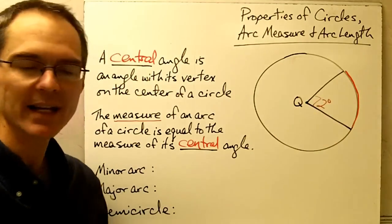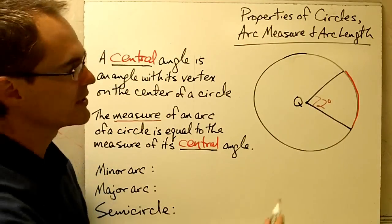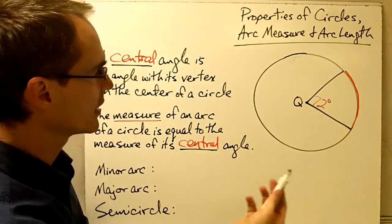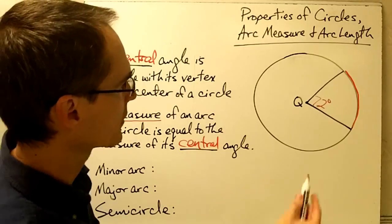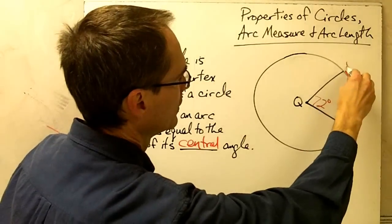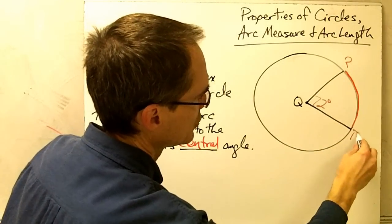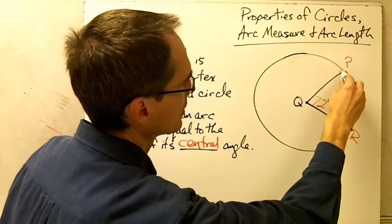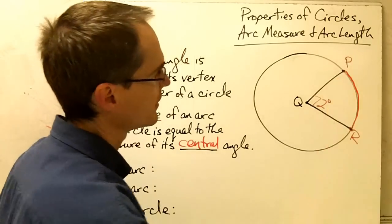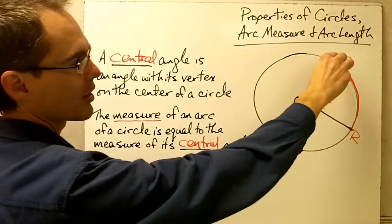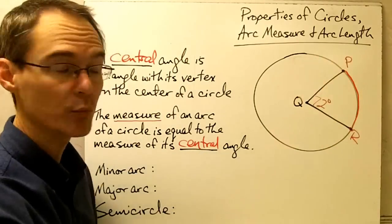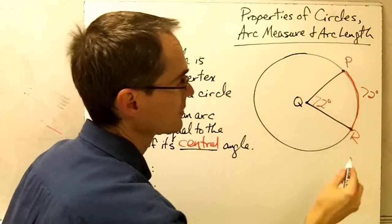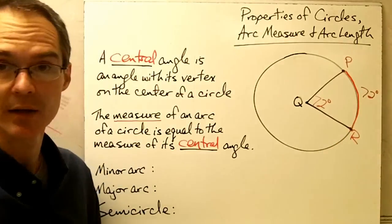If the measure of this central angle is 72 degrees, then we would say the measure of arc PR — let's call the points P and R — the measure of arc PR would be 72 degrees, the same as the central angle.